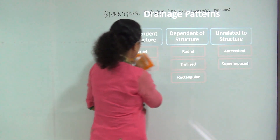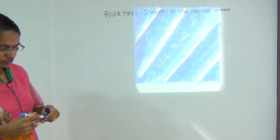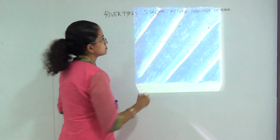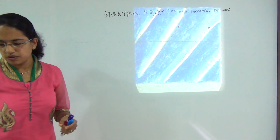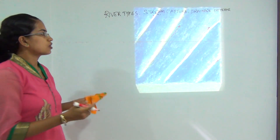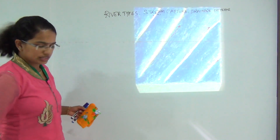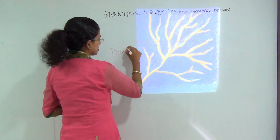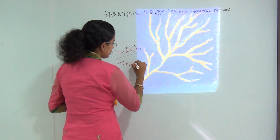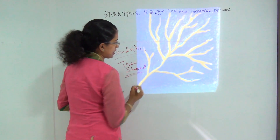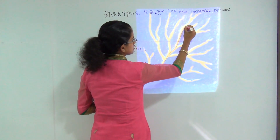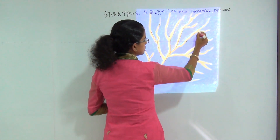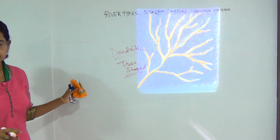The first is the parallel drainage system: streams running parallel to each other, usually found in terraces with a uniform slope. A common example is the Buruddin fountains in Kenya. The next is the dendritic drainage pattern — 'dendritic' meaning tree-shaped. The main river flows and numerous tributaries join it, creating a tree-shaped pattern. This is the dendritic structure or dendritic pattern.